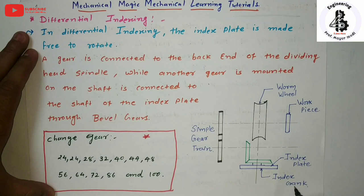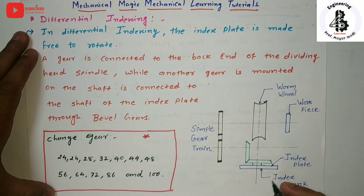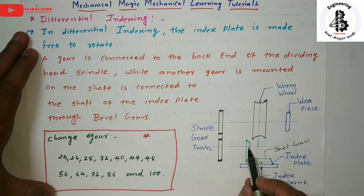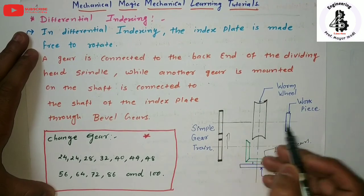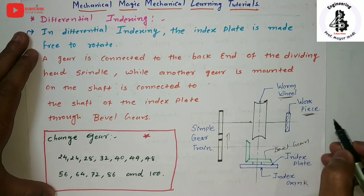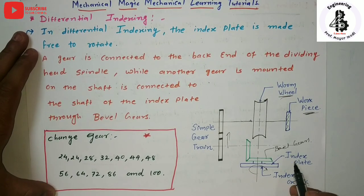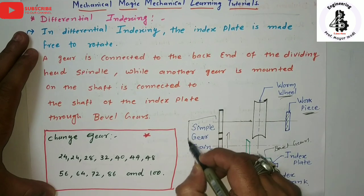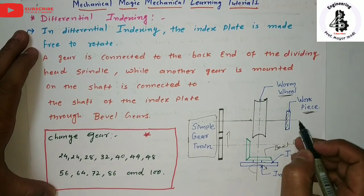In the construction, the index plate is connected with the index crank. That index plate and crank are connected with bevel gears, which are connected with a simple gear train mechanism. That gear train is connected with a worm and worm wheel, and finally it is connected with the work piece material. The motion of the index crank via the index lever, index plate, and bevel gears drives the simple gear train.